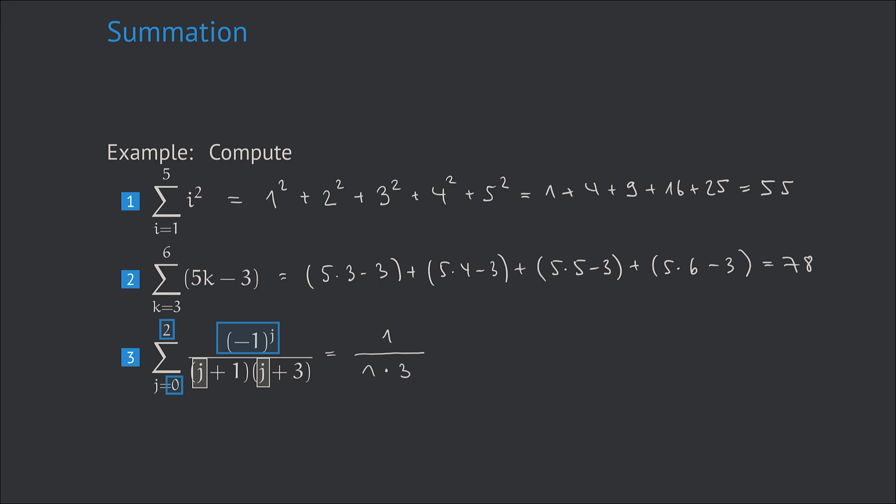For the next summand j takes on the value 1. In this case the numerator switches to minus 1 to the power of 1 which is minus 1 which altogether results in a minus sign. And the denominator takes on the values 2 and 4. The last value of j is 2.